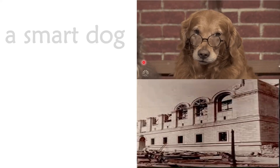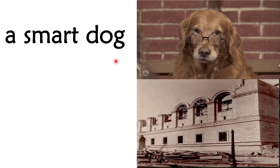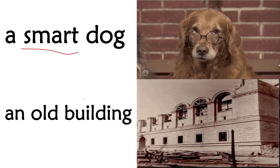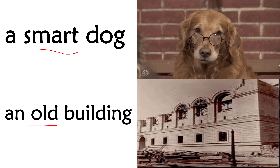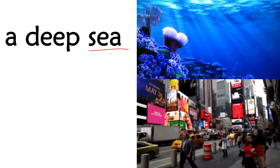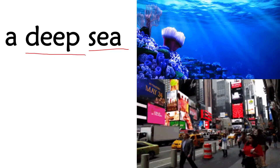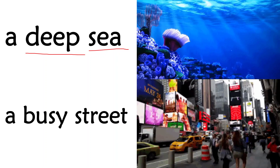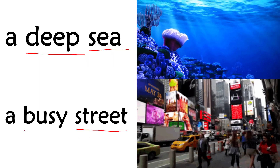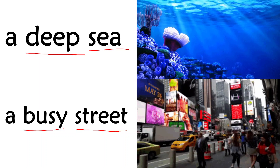Let's learn through examples. A smart dog — here the dog is a noun, but smart is showing the quality of the dog. So smart is the adjective in this sentence. An old building — building is our noun, but old is describing the noun. So old is the adjective. A deep sea — sea is the noun, but the noun is described by the word deep. So deep is the adjective here. And a busy street — street is the noun, but it is described by the word busy. So busy is the adjective which is showing something about the noun.